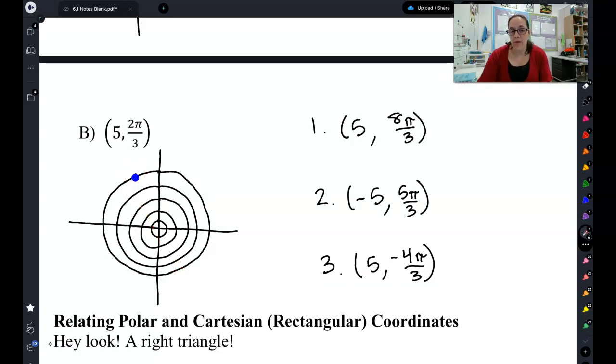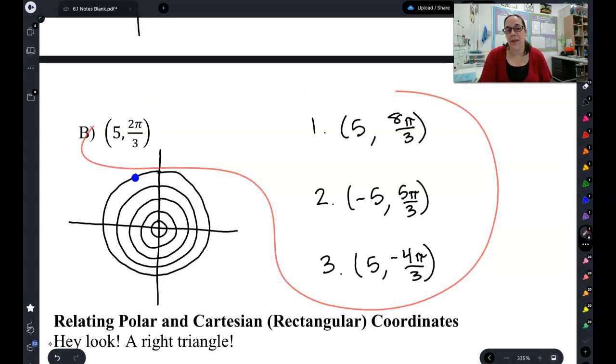And if I want my angle to be negative, 1π/3, 2π/3, 3π/3, 4π/3. So if I go clockwise, that's negative 4π/3 to get to the same point. So those are, once again, 4 different versions to write the exact same point on this polar coordinate plane.